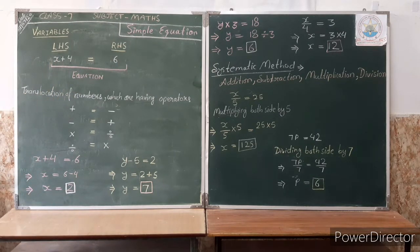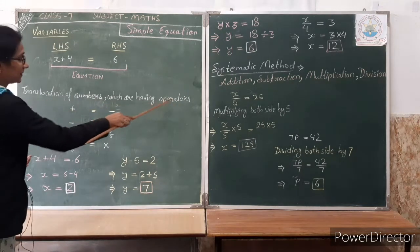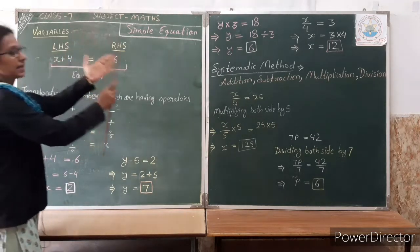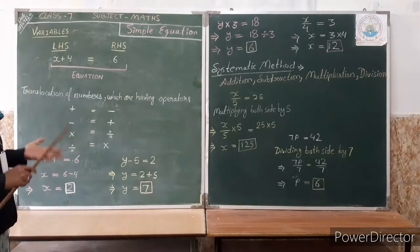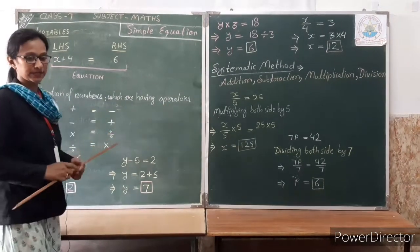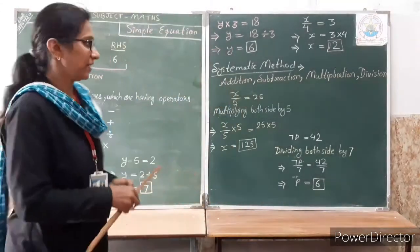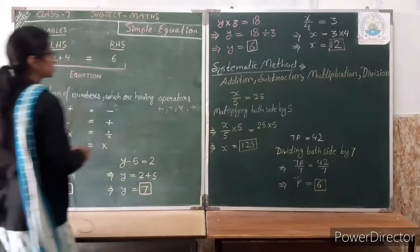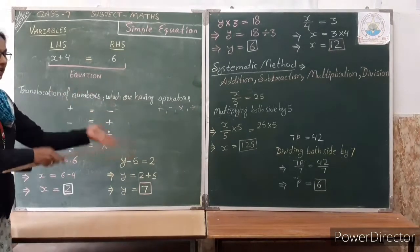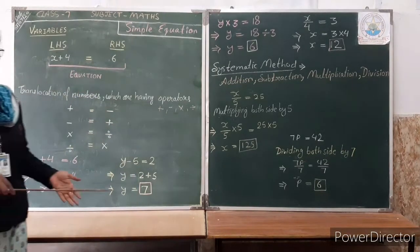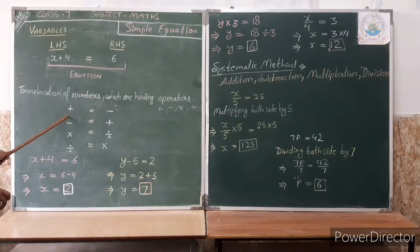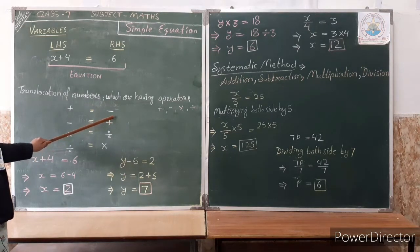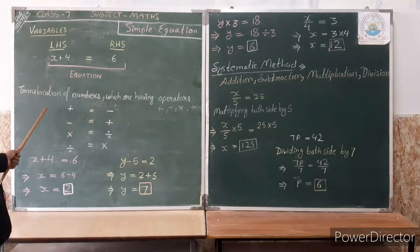Now we learn about the transposition of numbers which have operators. When we transfer a number across the equal sign — from the left-hand side to the right-hand side — there are some changes. If a number has a plus sign on the left-hand side and we move it to the right-hand side, then it becomes minus. If it is minus on one side, it becomes plus on the other side.